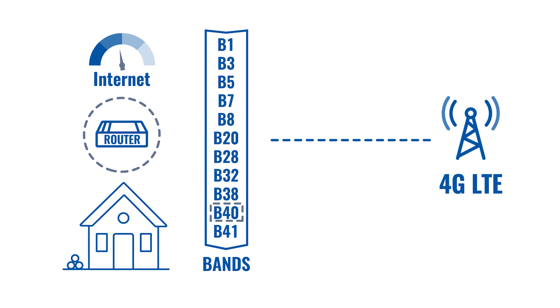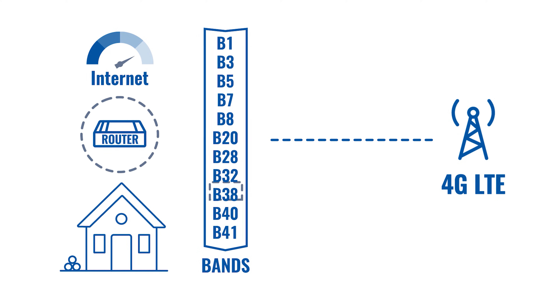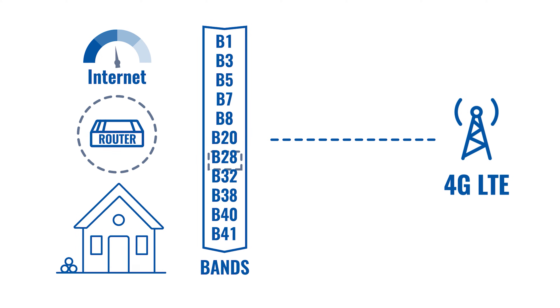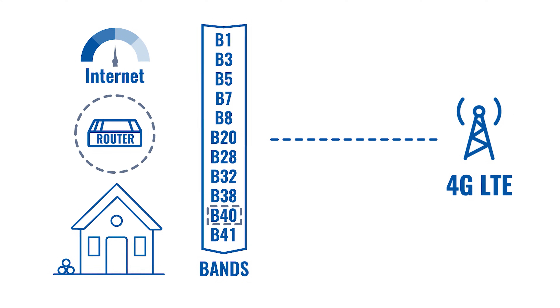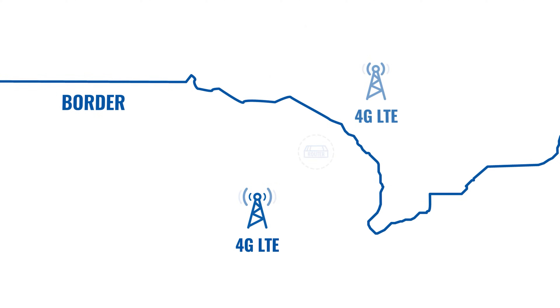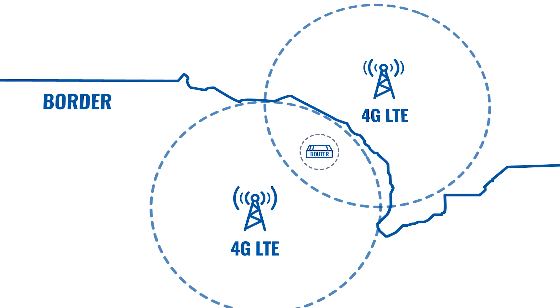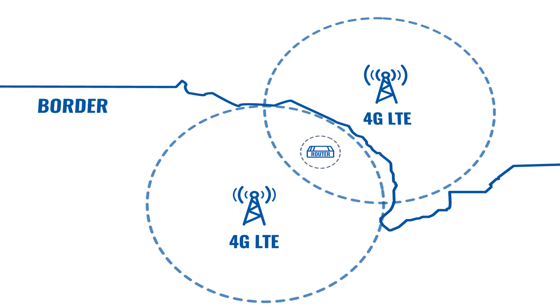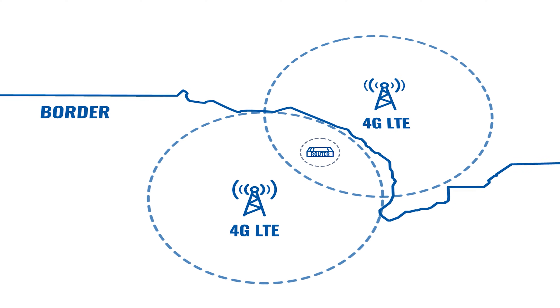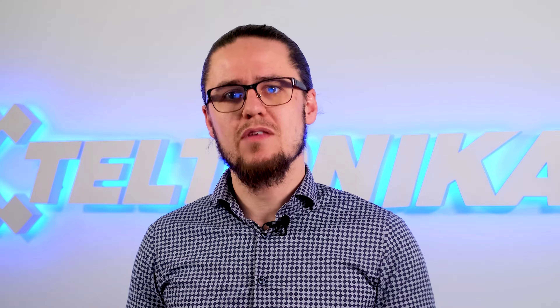Generally cellular routers pick which LTE band to choose automatically. However, the band that is chosen is usually determined by availability rather than connection quality in terms of speed. Moreover, in areas which are close to the borders of foreign countries, cellular provider signals do overlap. So your router might be periodically switching between different operators, which does affect stability of your connection. Locking your device to a specific LTE band can have a significant effect on your internet connection speed and reliability, because the band chosen automatically might not really be the one that offers the fastest or most stable connection available.